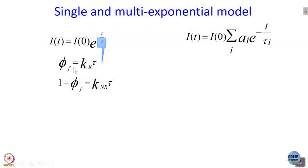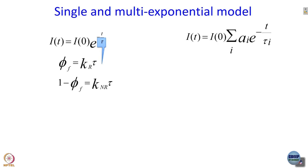The good thing about knowing the fluorescence quantum yield from steady-state measurement and the lifetime from a time-resolved measurement is that you can work out the radiative rate constant. More importantly, 1 minus phi_f is equal to k_NR multiplied by tau, so you can work out the non-radiative rate constant. As we go further, we will more and more want to know the rate constant associated with some non-radiative process in the excited state, and this is how we get the answer.